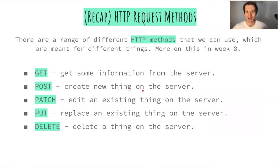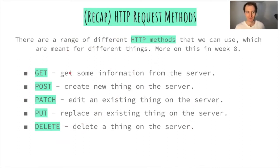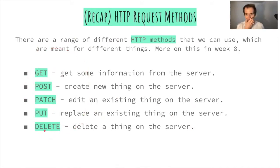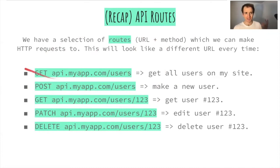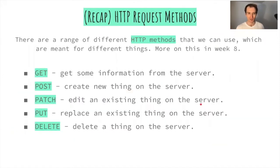As a quick recap on HTTP request methods: we have GET for grabbing something, POST for creating something, PATCH and PUT for updating something (slightly different between those two), and DELETE for deleting something. A route is just the method plus the domain — one particular window of one particular restaurant serving up whichever resource we're selling.